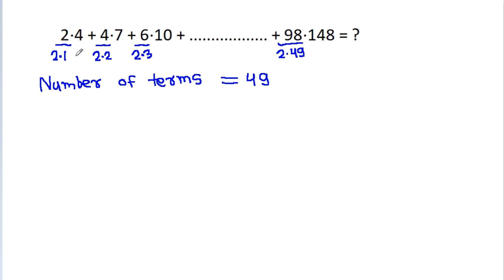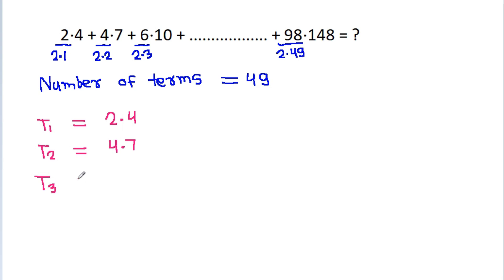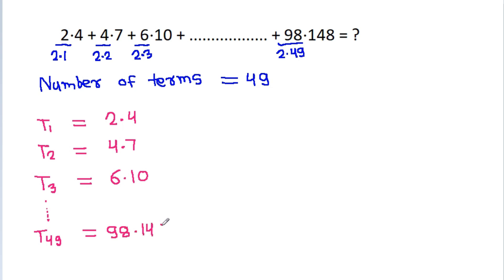The first term T1 is 2 times 4. Second term T2 is 4 times 7. Third term T3 is 6 times 10. And the 49th term T49 is 98 times 148.